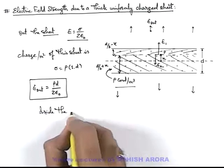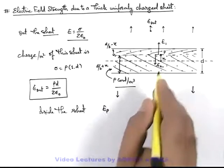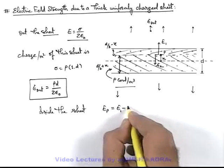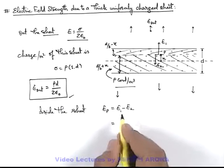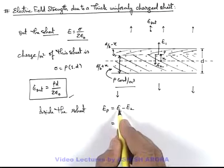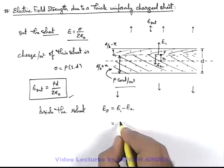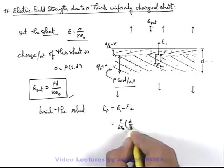Then we can directly write inside the sheet, electric field at point P which is located at a distance x from the central plane can be given as E₁ minus E₂. And here E₁ and E₂ can be obtained by using this result as - E₁ is due to a sheet of thickness d by 2 plus x, then E₁ can be written as ρ by 2ε₀, d by 2 plus x.